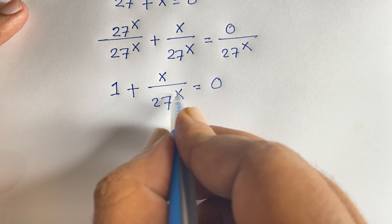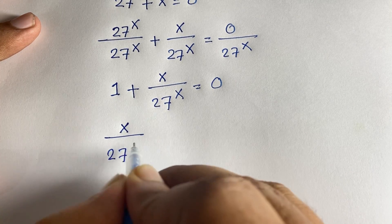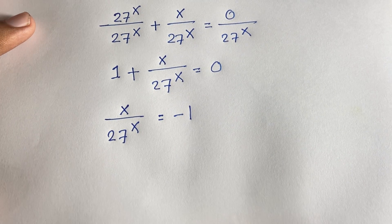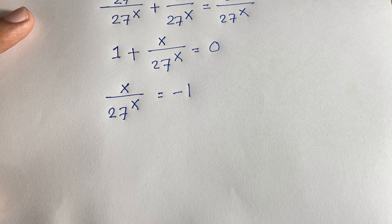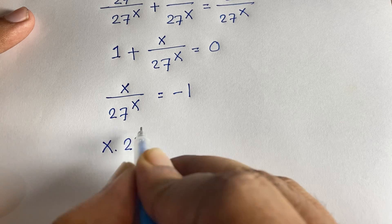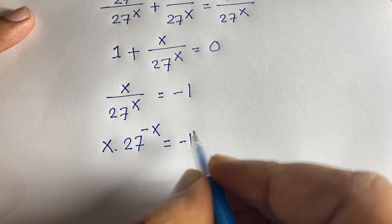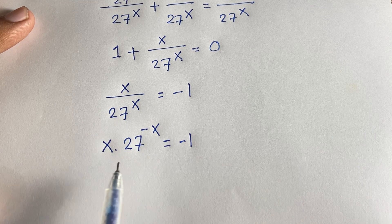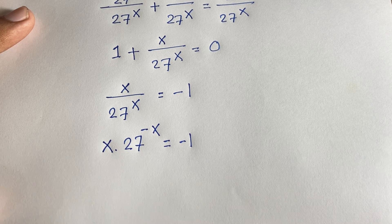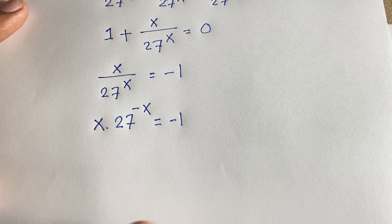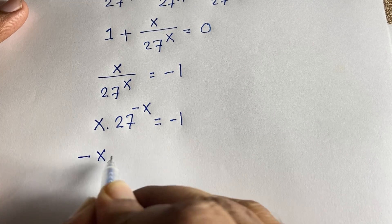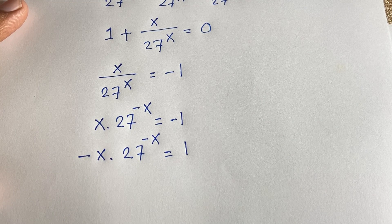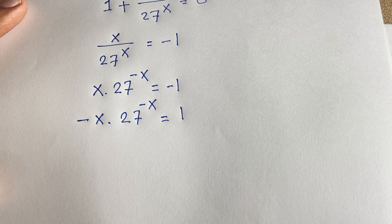From 1 + x/27^x = 0, we get x/27^x = -1. Using the rule 1/a^n = a^(-n), this becomes x · 27^(-x) = -1. Multiplying both sides by -1 gives -x · 27^(-x) = 1.